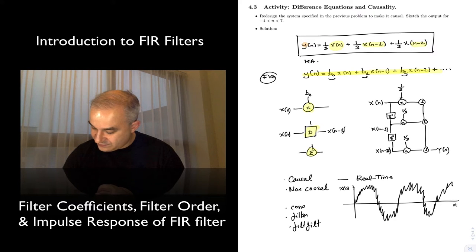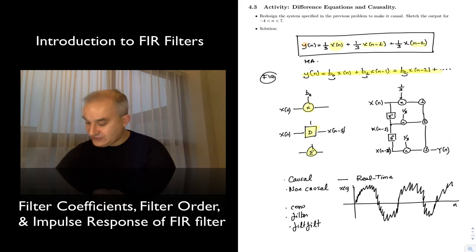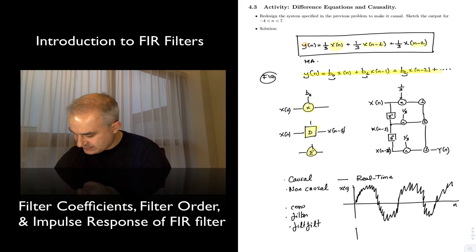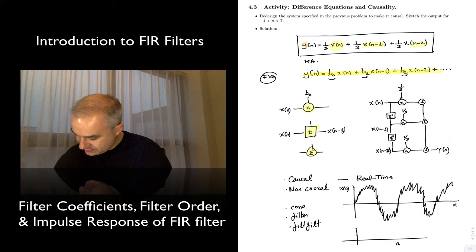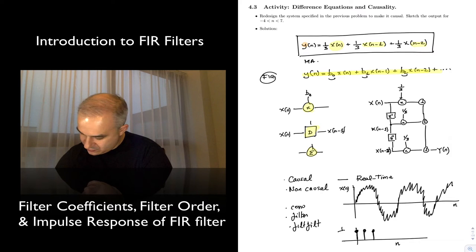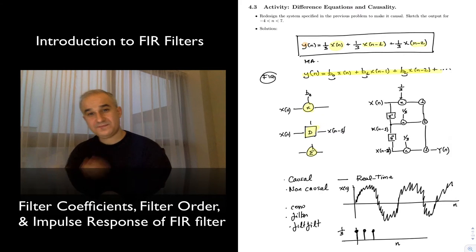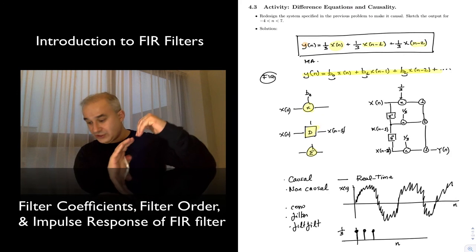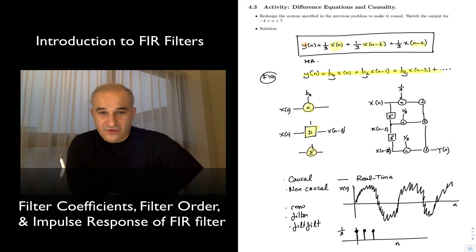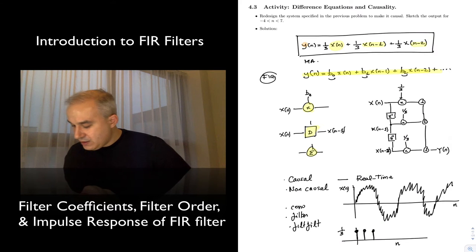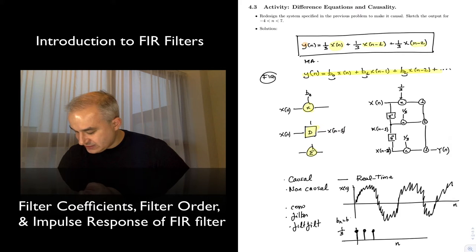You apply this filter, which you can think of as the impulse response. It has three points: one-third, one-third, one-third. And you are doing a convolution. Filtering is implemented with convolution of x of n times these B coefficients, which we are going to see is equivalent to the impulse response h of n.